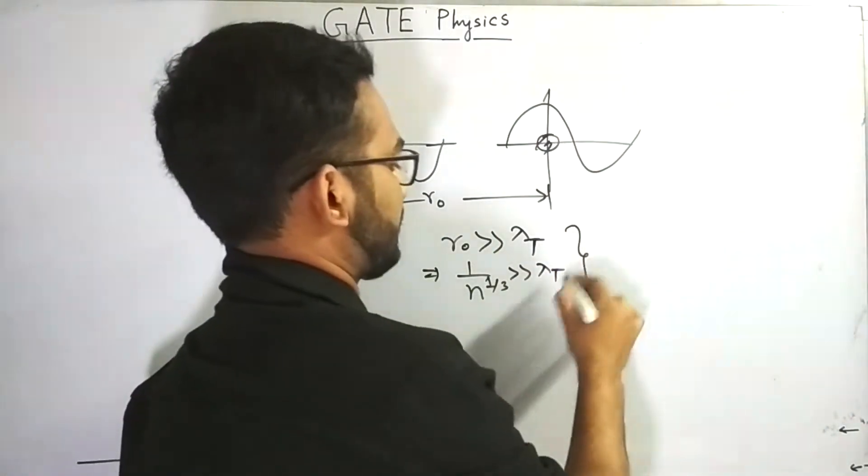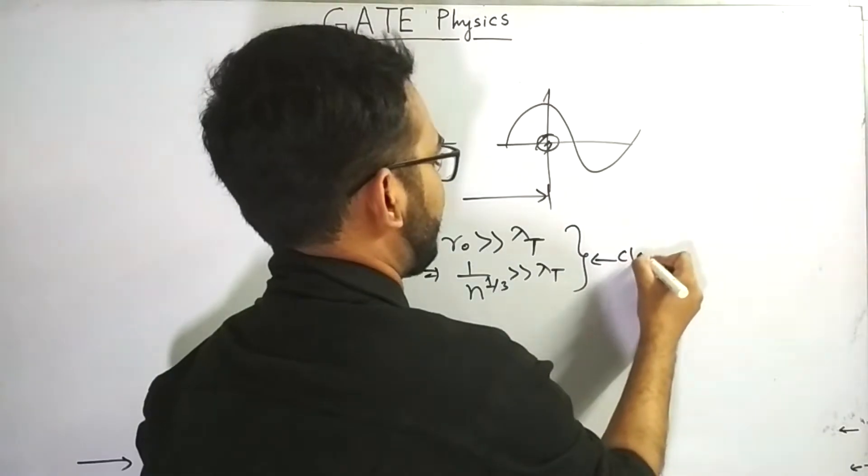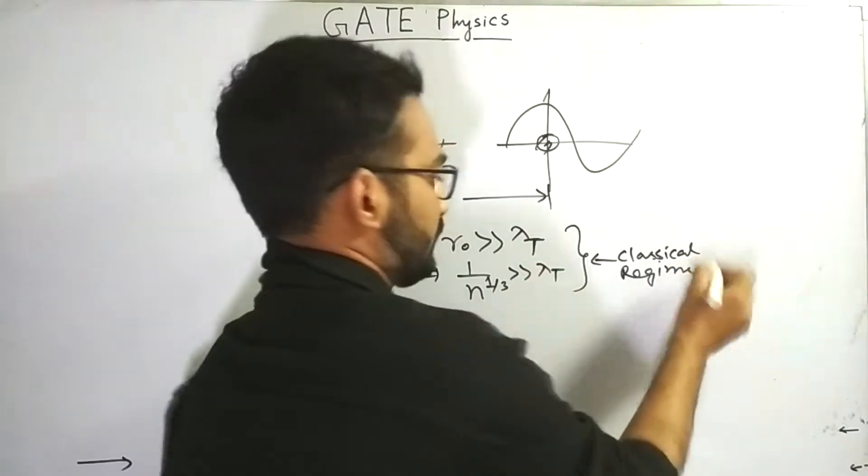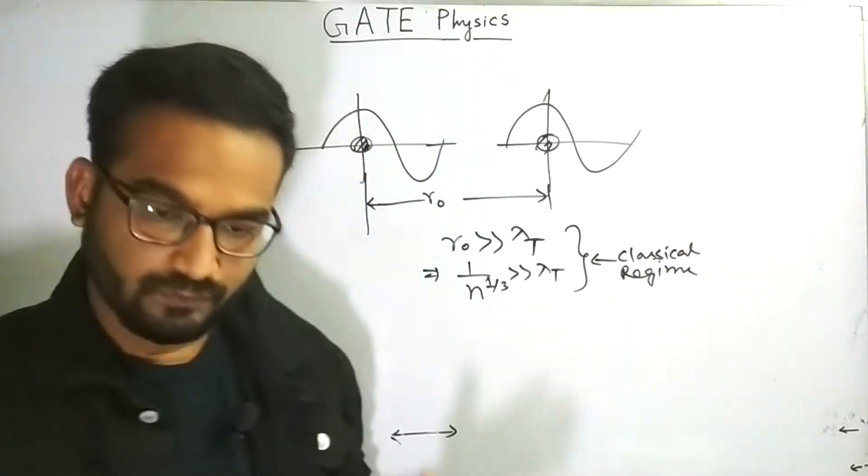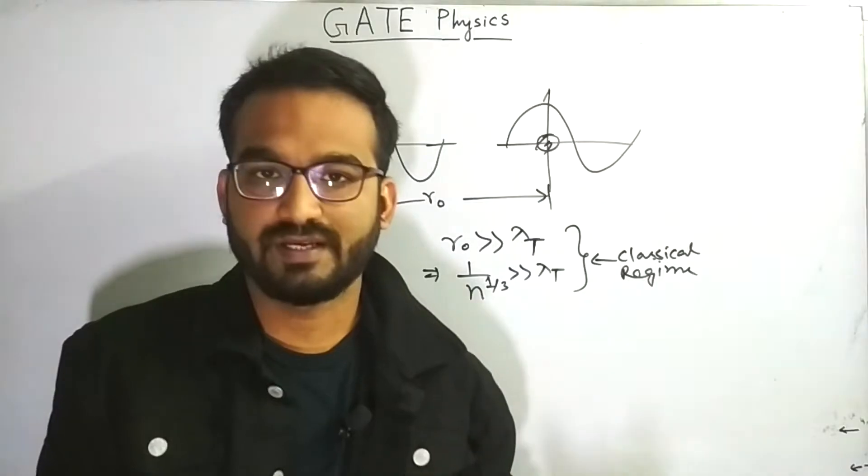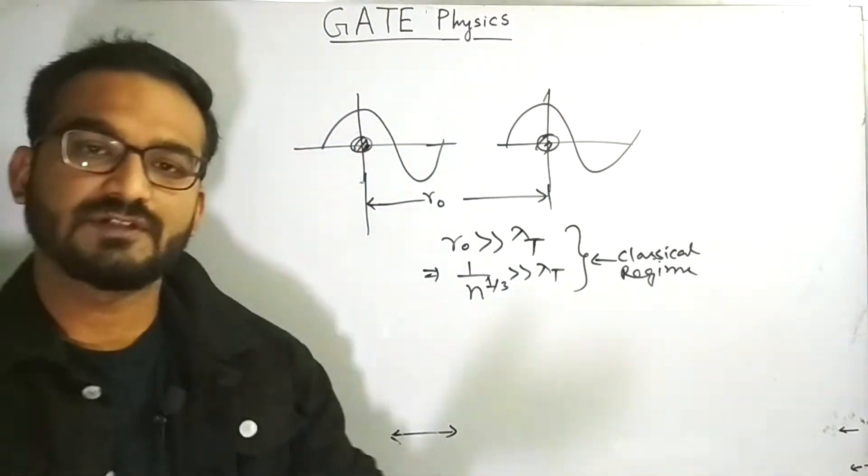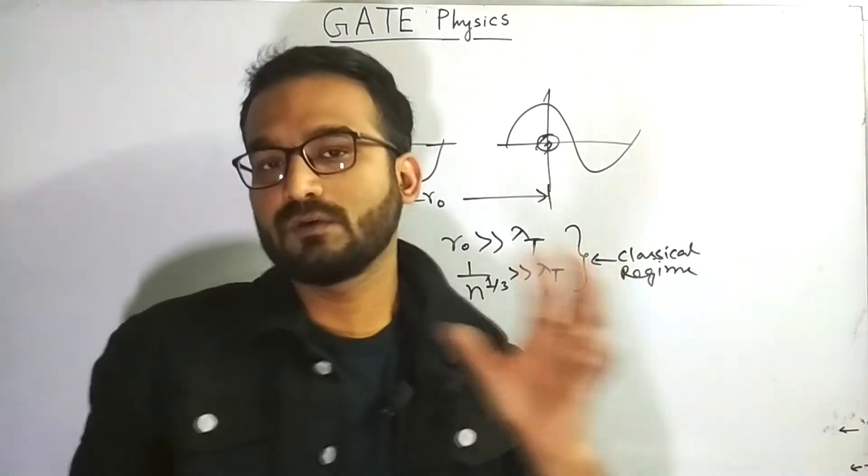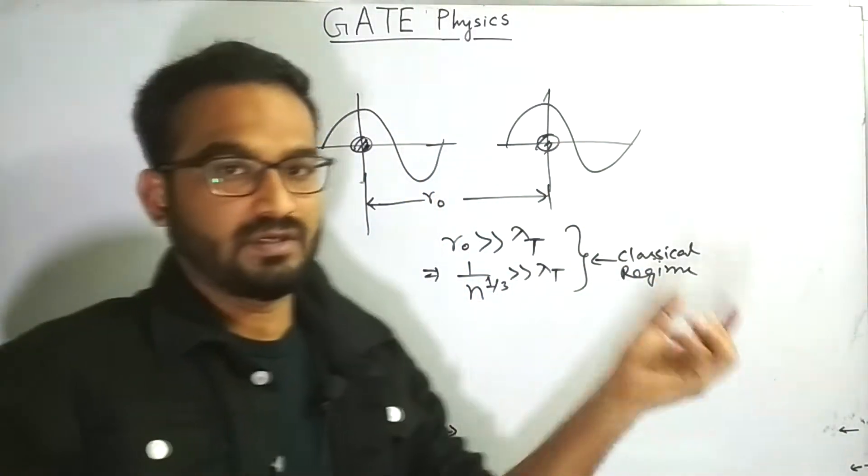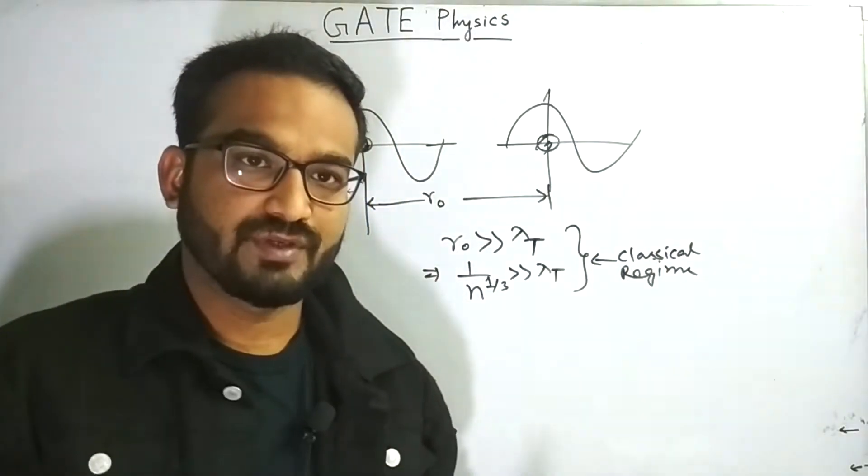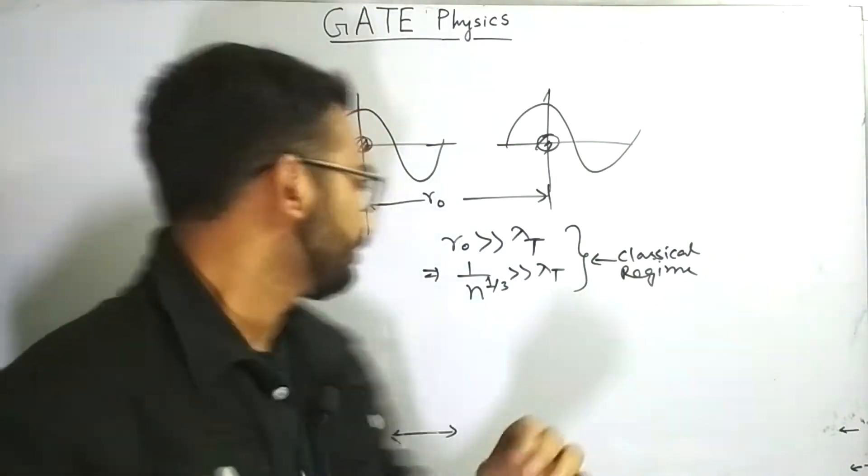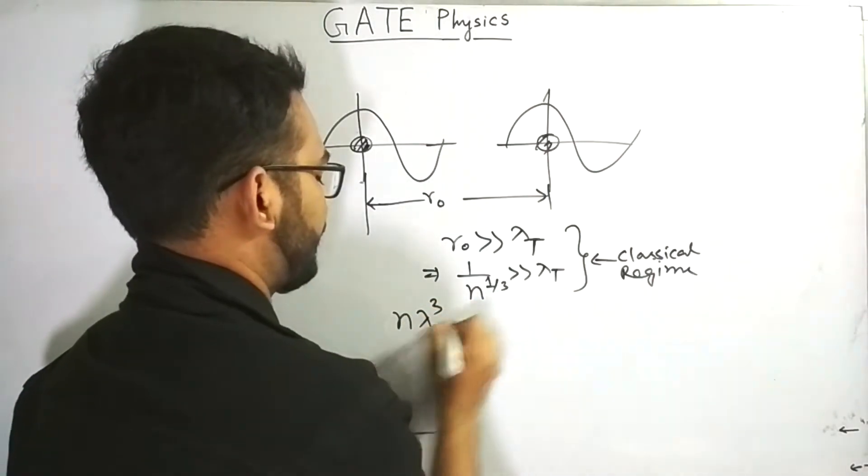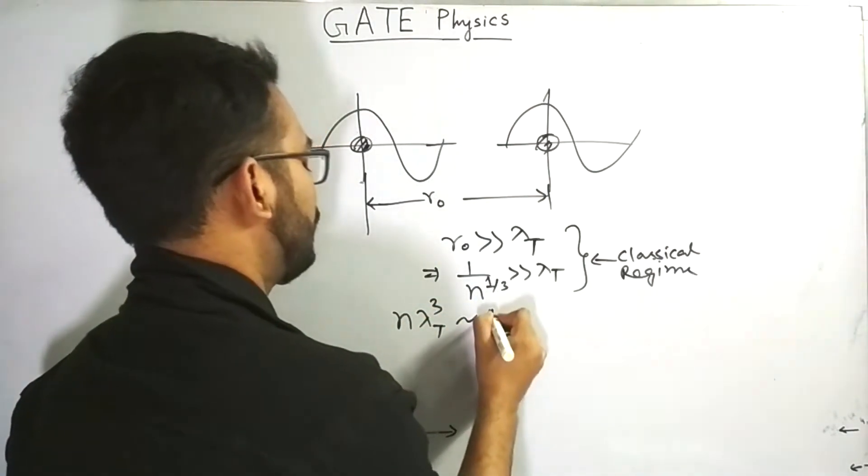So when we will get this type of case, we can say that the gas molecules are in classical regime. Now, when we move towards the quantum regime, then what happens? The wave function of the different particles starts overlapping to each other. And what is the corresponding condition in these terms? When the quantum effect starts dominating, then the corresponding relation becomes n lambda t cubed approximately proportional to 1.